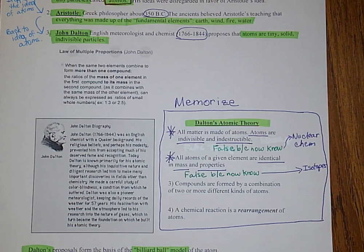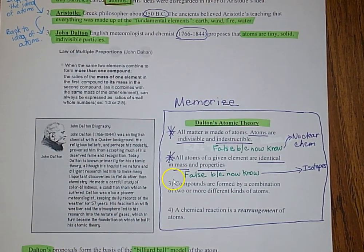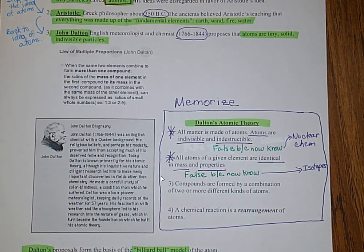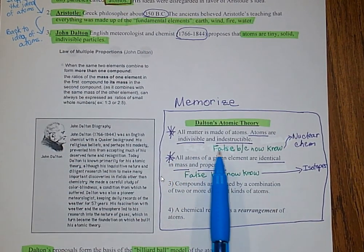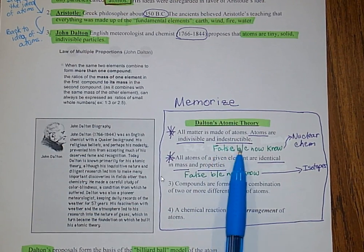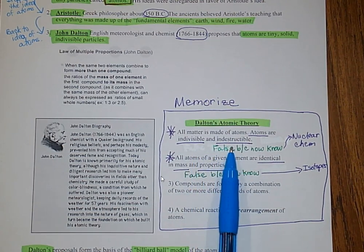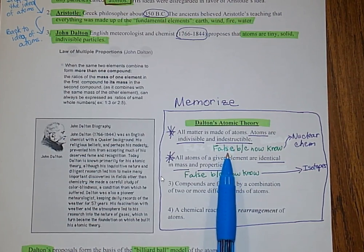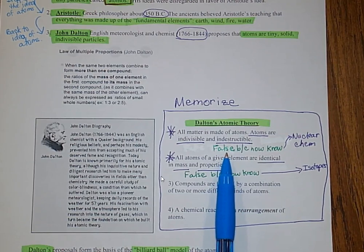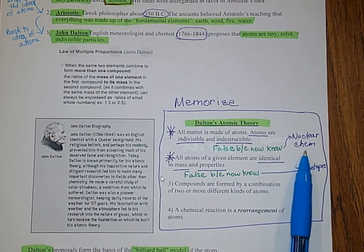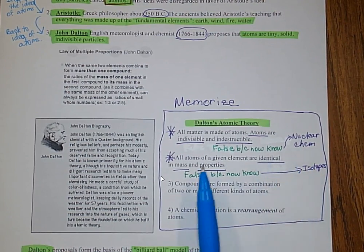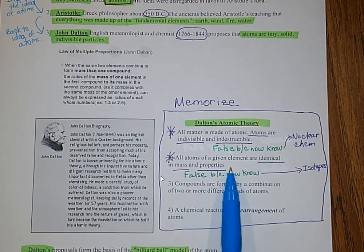After a while, it was found that the first and second postulates of Dalton's atomic theory were not correct. The idea that atoms are indivisible and indestructible is false, because now we know that atoms are made up of protons, electrons, and neutrons. This is where the whole idea of nuclear chemistry comes in.